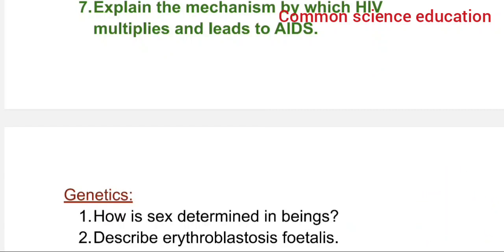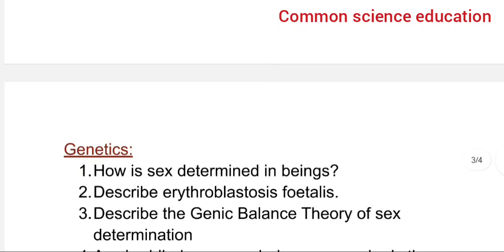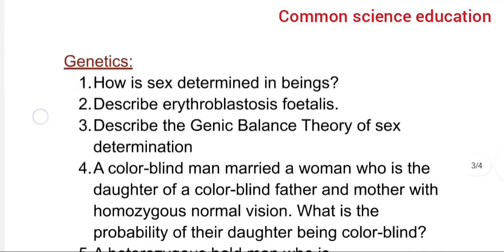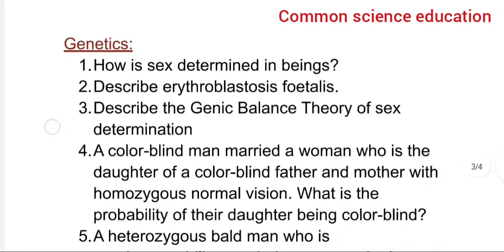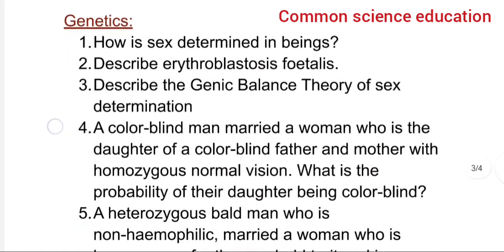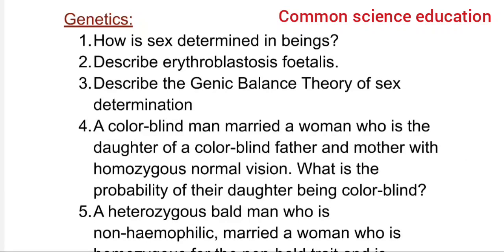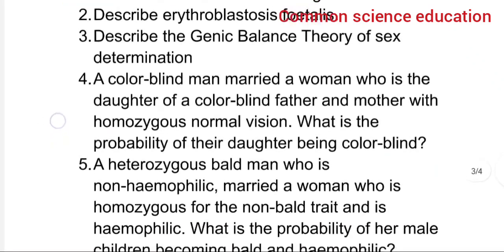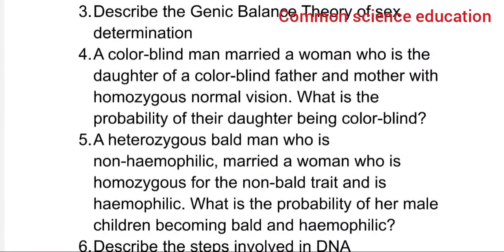Describe erythroblastosis fetalis. Describe the genic balance theory of sex determination. A colorblind man married a woman who is a daughter of a colorblind father and a mother with homozygous normal vision — what is the probability of their daughter being colorblind?